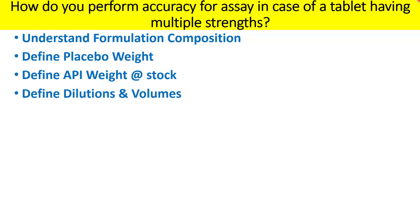We will first understand the formulation composition, because it is important — if you have a dose-proportionate formulation, you can have a single accuracy study for all multiple dose strengths. But if you have a pseudo dose-proportionate or non-proportionate formulation, you cannot. We also need to define the placebo weight across all strengths, the API weight or concentration in the stock of each assay preparation, and finally the dilution and volumes.